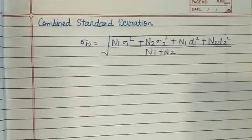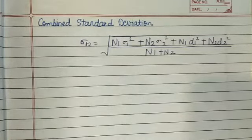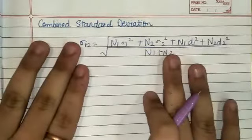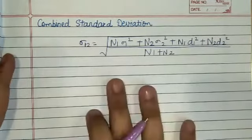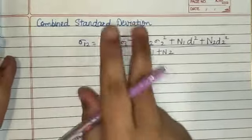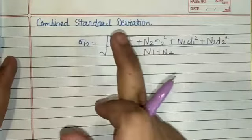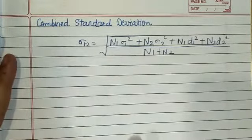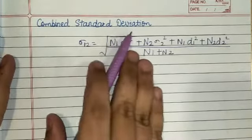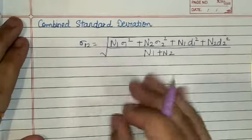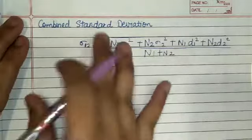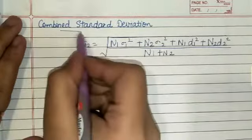Hello everyone, welcome back to this channel. Today we will continue with our chapter on Measures of Dispersion, Class 11 Statistics — this is Part 5. We have completed topics like standard deviation, mean, coefficient of variation. Now we have just two small topics left: combined standard deviation and variance.